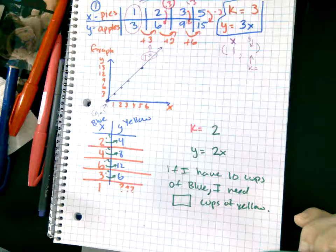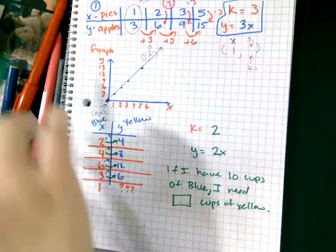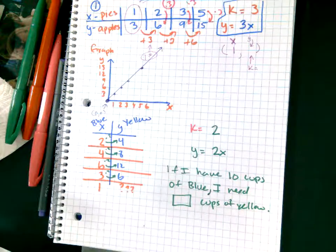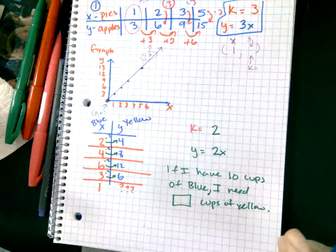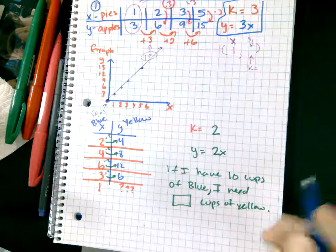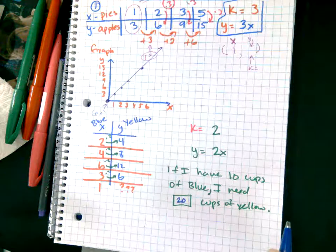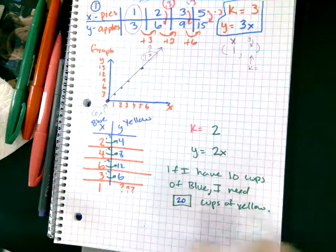Am I lagging? Can you hear me? When a student says I can't hear you, I got to check with the whole class. Yes, so you need 20 cups of yellow. Fantastic. So they can ask you questions, just give them the table.